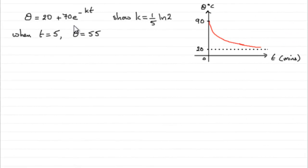Now what I've done is I've taken the equation and I've replaced the a with the value we found in the first part, a was 70. So I've updated the equation for theta and we've got to show then that k equals 1 fifth natural log of 2.